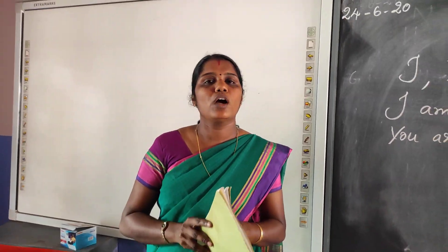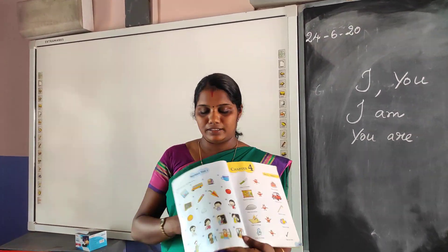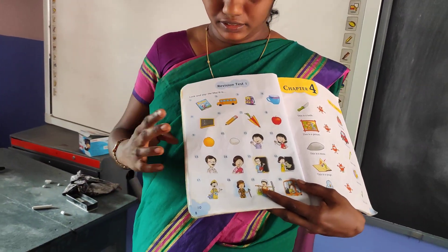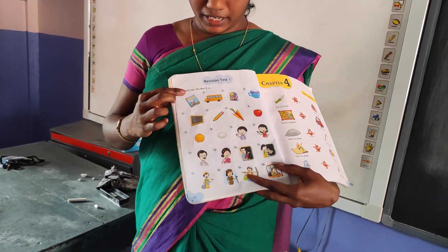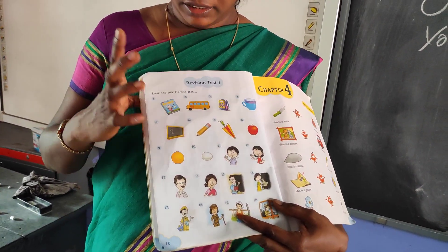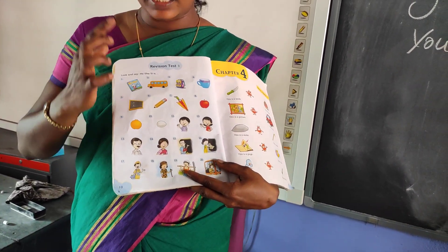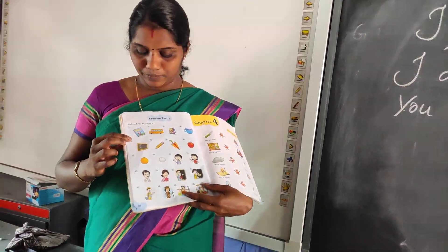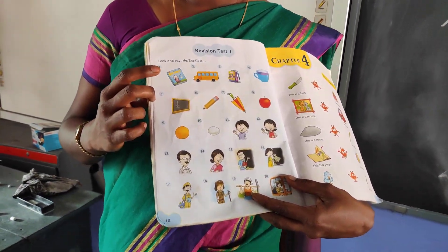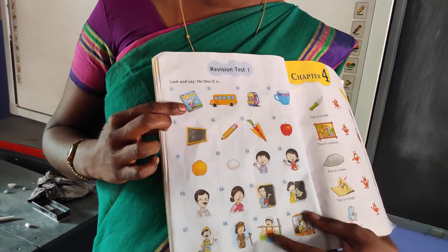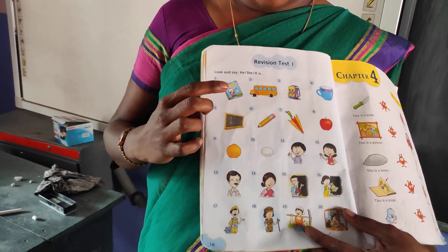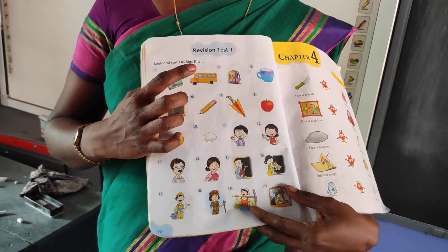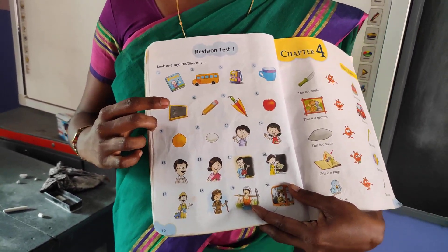Next page — you have a revision test, page number 10. It is to revise what you have learned. Look and say he, she, or it. The first one — it is a book. We use it because book is a thing. The second one — it is a bus. Bus is a vehicle, so we use the pronoun it. Next: bag — it is a bag. Cup — it is a cup. Next — it is a blackboard. Pencil — it is a pencil.